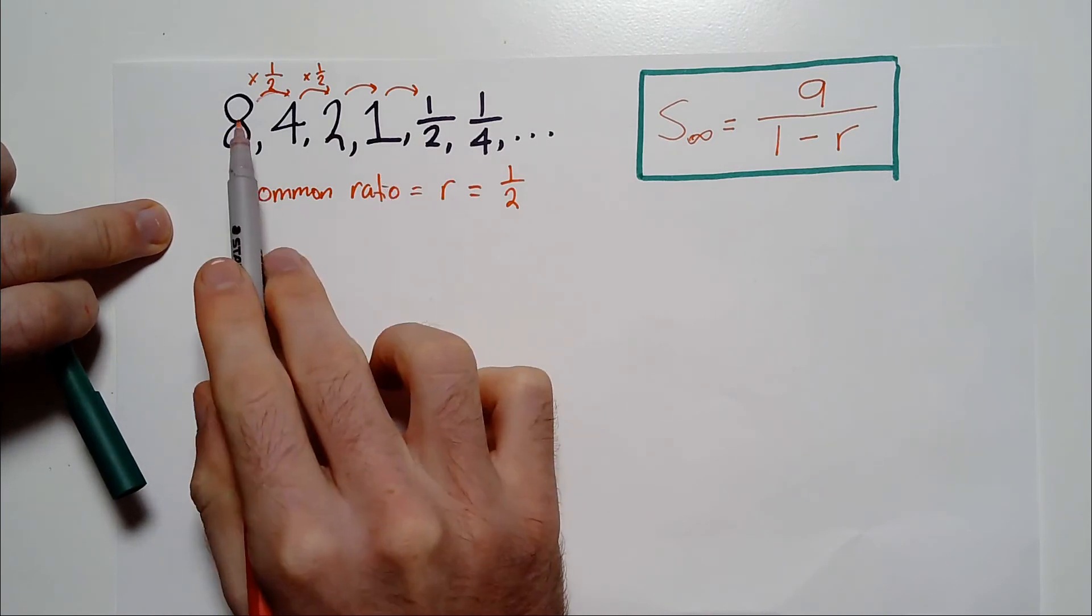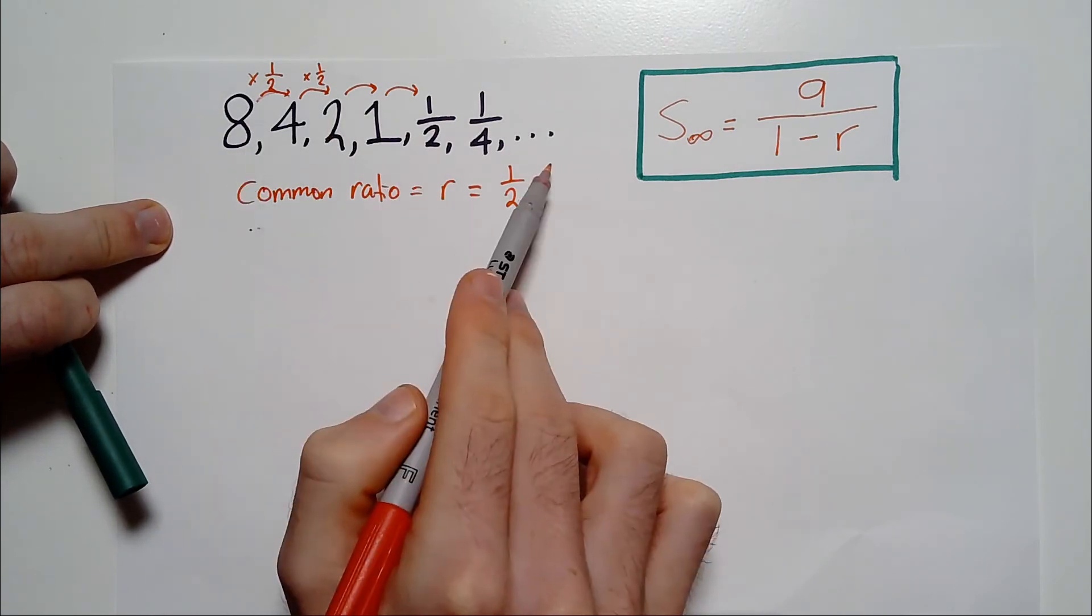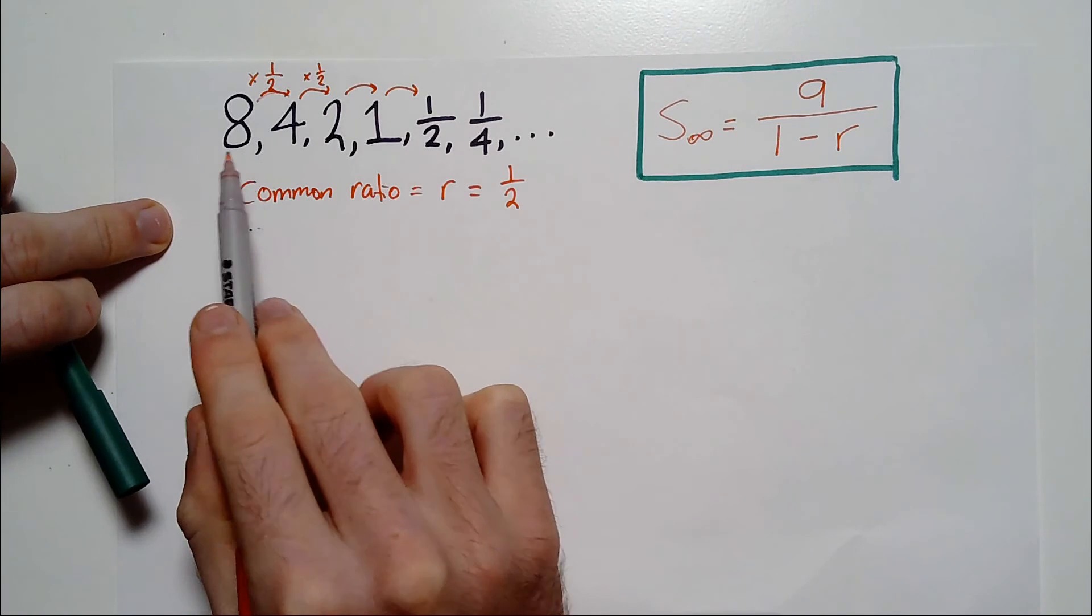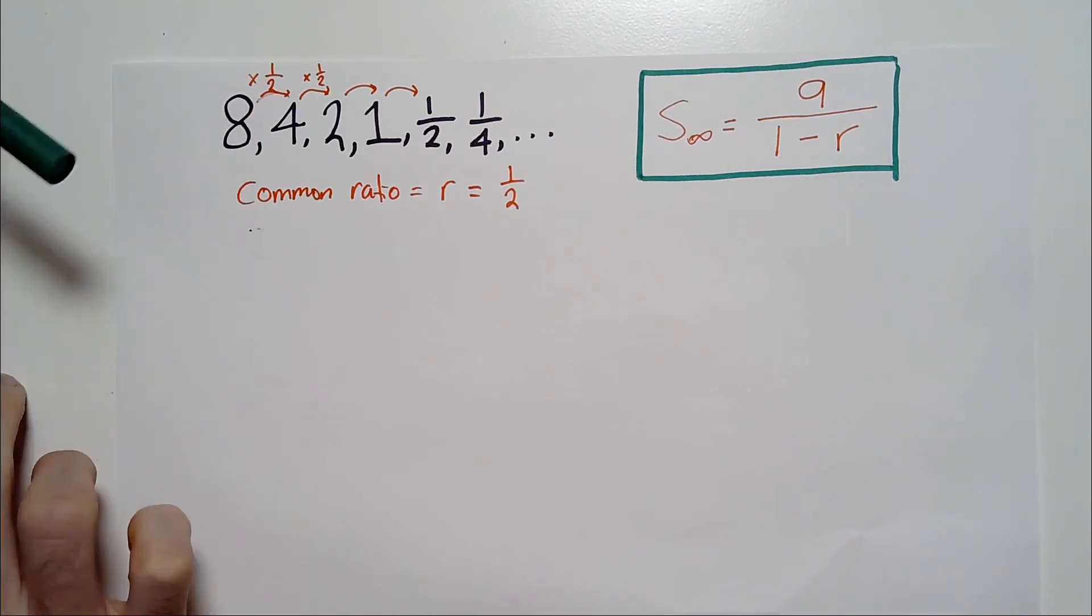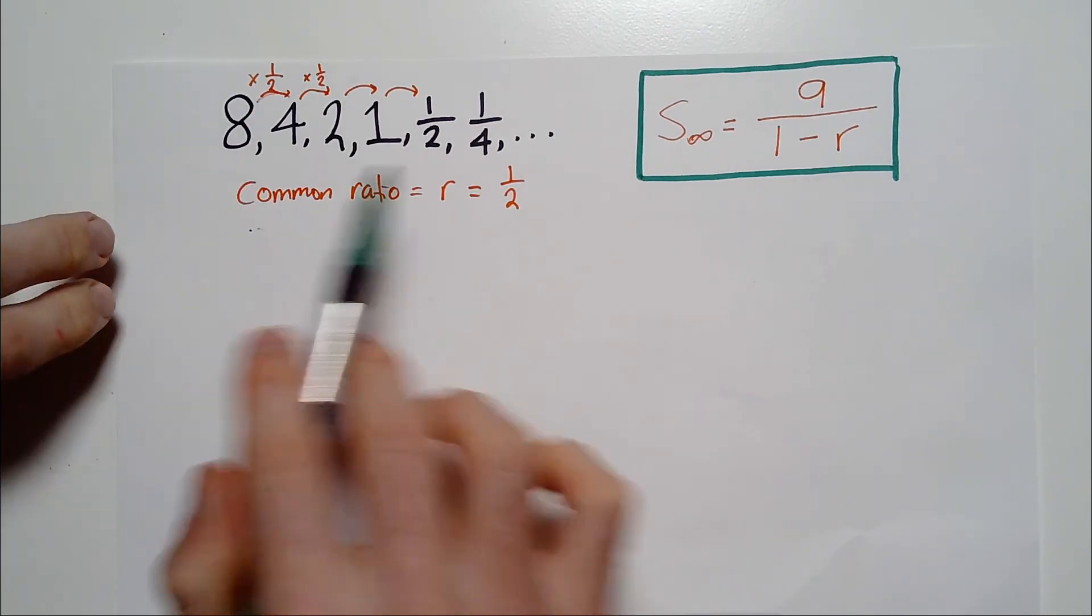So we have a common ratio, which in this case is a half. That is, we have a number that we multiply all of the numbers in the series by to get to the next number. It's got to be common, it's got to be consistent. It's always a half in this case. So that's the first thing. We have a pattern of numbers with a common ratio. So you can keep multiplying by half to find the next term.